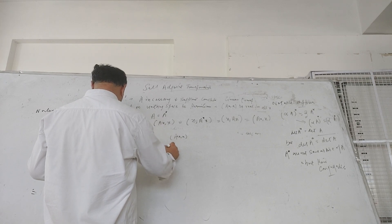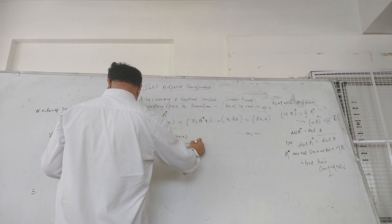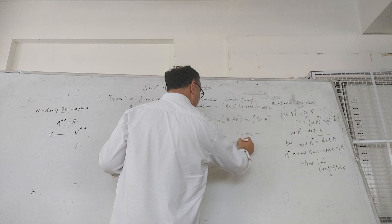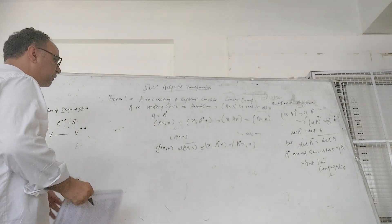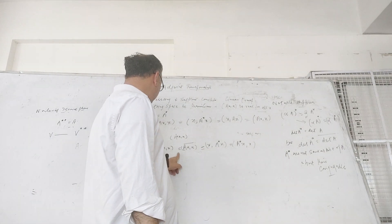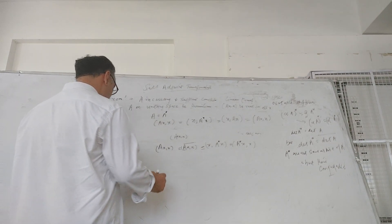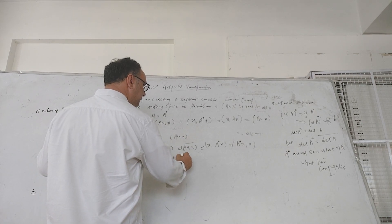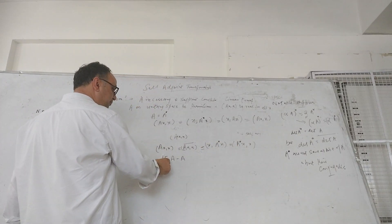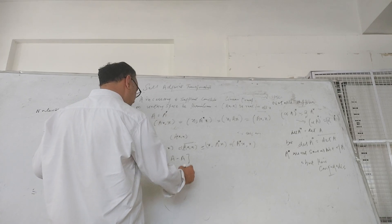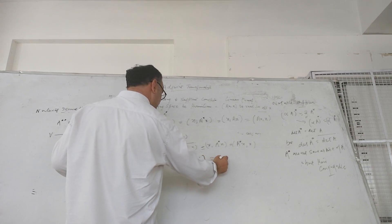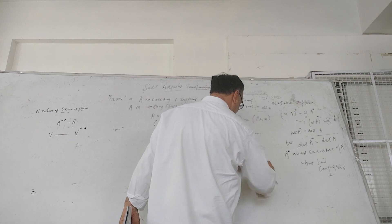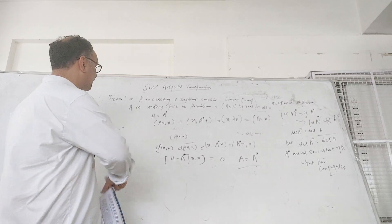So Ax, x is equal to its own conjugate and therefore is real. Writing Ax, x equals x, A-star x, we can factor out A minus A-star, so that (A minus A-star) x, x equals zero for all x, which gives A-star equals A. This proves the necessary and sufficient condition for a transformation to be Hermitian. An important difference is that this theorem is not true for real inner product spaces.